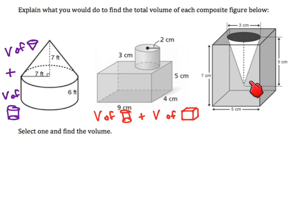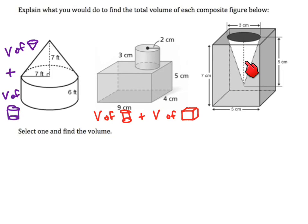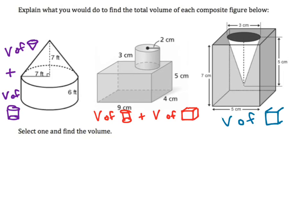Last one here, we have a rectangular prism with a square base, and we have a cone — but it's not being added, it's being subtracted this time. So we have everything here minus this. We figure out the volume of the rectangular prism and subtract the volume of the cone.